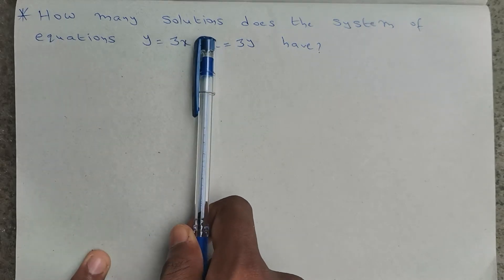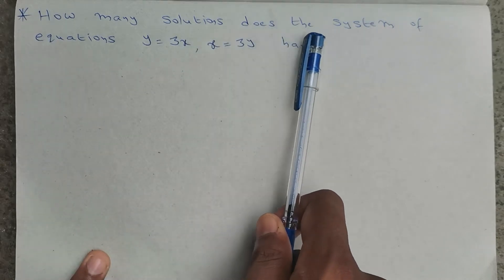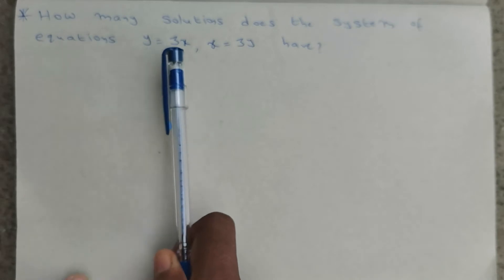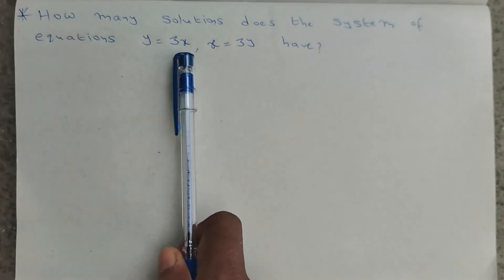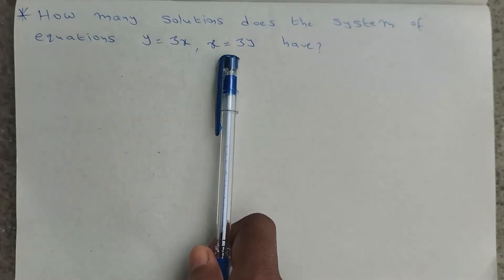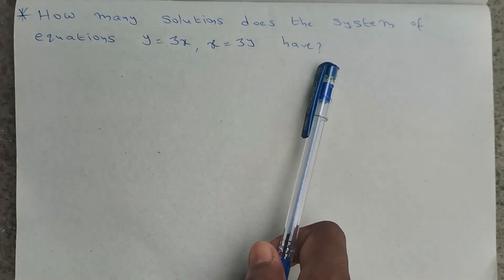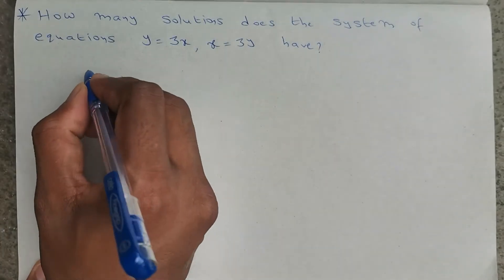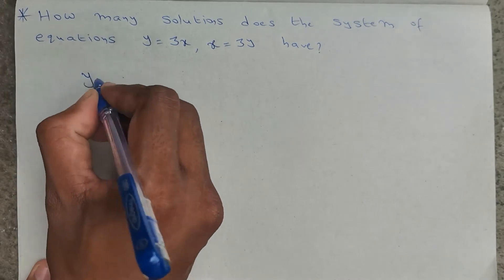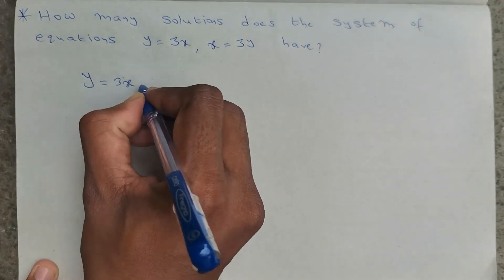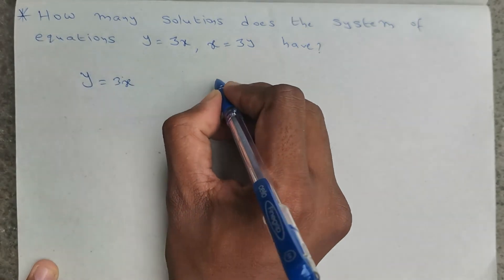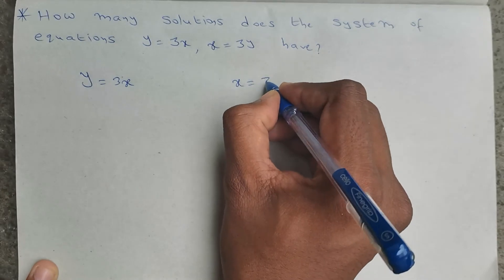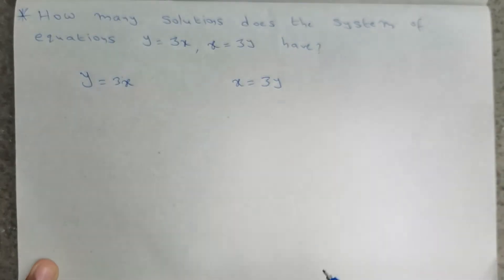How many solutions does the system of equations y equals 3x and x equals 3y have? The given two equations are y equals 3x and x equals 3y.